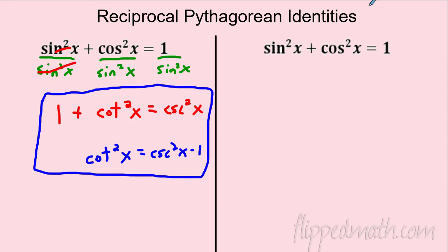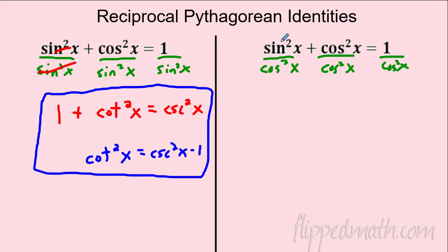Now let's do something similar by dividing by cosine squared instead. Sine over cosine is tangent, cosine squared over cosine squared is one, and one over cosine is secant. So we get: tangent² + 1 = secant².